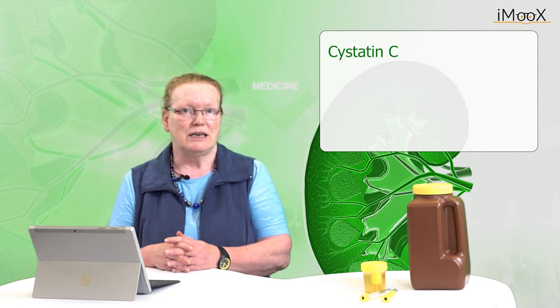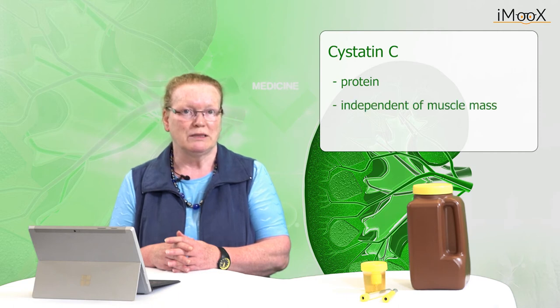A novel endogenous marker for GFR is Cystatin C. Cystatin C is a protein produced in all human cells. Its production is independent of muscle mass and it is filtered freely through the glomeruli. In contrast to creatinine, Cystatin C is degraded when it passes the tubular system of the kidney, and therefore it cannot be detected in urine.